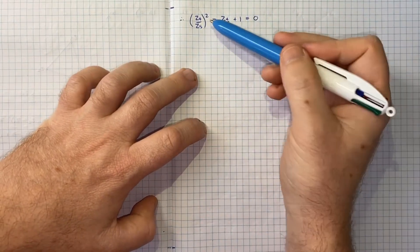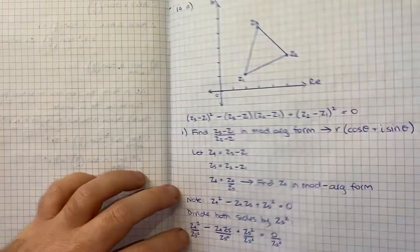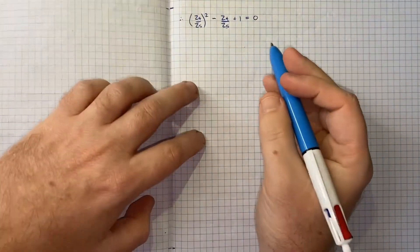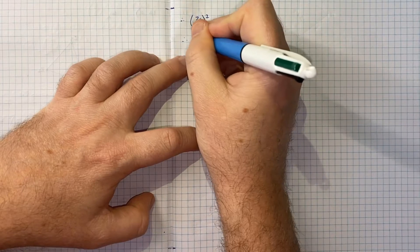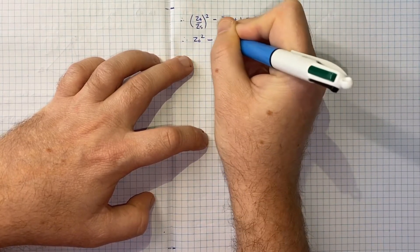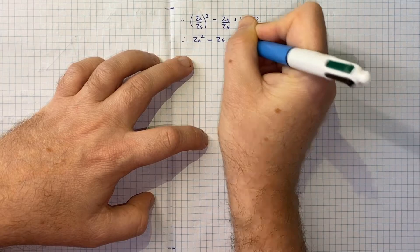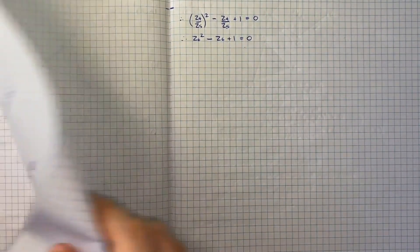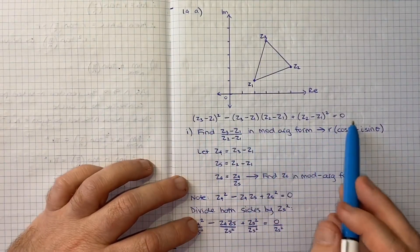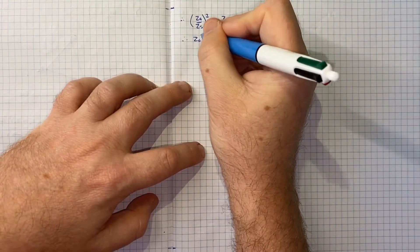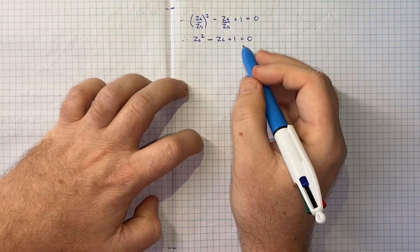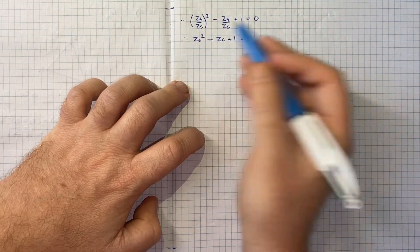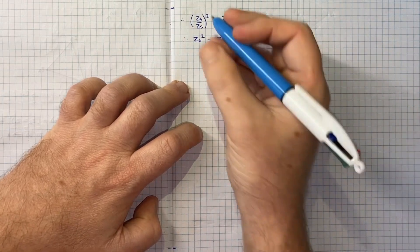From here, we can now take the fact that we defined Z6 to be Z4 over Z5, and so now we can put in Z6. Therefore Z6 squared minus Z6 plus one equals zero. Hopefully you can see that's much simpler to deal with, and we've got now a simple quadratic. Since we're concerned with what is Z6, we can solve for it using the quadratic formula.